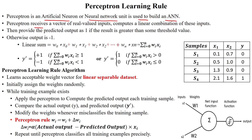The perceptron receives a vector of real-valued inputs and computes a linear combination of these inputs. For example, the given dataset has feature 1, feature 2, and a target output or desired output with four samples. Using these inputs, it calculates the linear combination: w0*x0 + w1*x1 + w2*x2 + ... + wn*xn, expressed as the summation from i=0 to n of wi*xi.